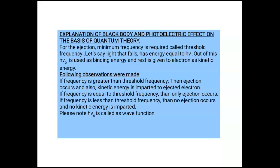Let us now discuss the explanation of the photoelectric effect on the basis of quantum theory. The ejection of electrons from the surface is called the photoelectric effect, put forward by Hertz in 1887. For the ejection of electrons, a minimum frequency is required, called threshold frequency. The light that falls has energy equal to hν. Out of this energy, hν₀ is used as the binding energy, and the rest is given to the electrons as kinetic energy.